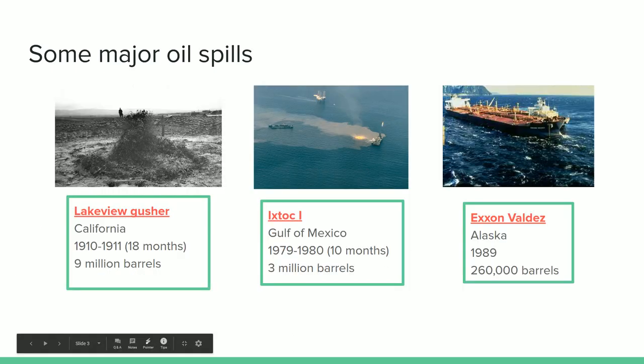The Deepwater Horizon oil spill is one of the worst environmental disasters and oil spills in history. To give that context, we can look at some other major oil spills. In 1910 to 1911, for about 18 months, the Lakeview Gusher was an on-ground oil well that got out of control. The people responsible couldn't control it and just abandoned the scene. That gusher continued to spill oil on the ground for 18 months — estimates are something like 9 million barrels of oil — and it is by far the worst oil spill in history.